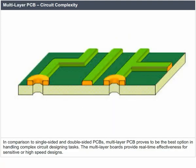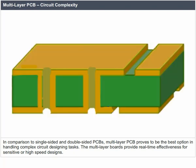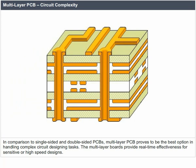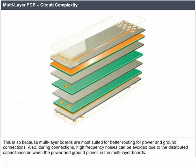Multi-layer PCB circuit complexity: In comparison to single-sided and double-sided PCBs, multi-layer PCBs prove to be the best option in handling complex circuit designing tasks. Multi-layer boards provide real-time effectiveness for sensitive or high-speed designs. They are most suited for better routing for power and ground connections, and high-frequency noises can be avoided due to the distributed capacitance between the power and ground planes.